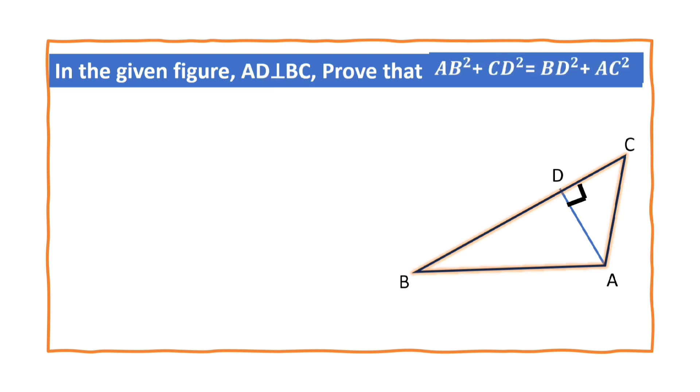We have to prove that AB² + CD². Where is AB? This is AB. Observe that this belongs to the right angle triangle. Which triangle? Right angle triangle ADB. I will highlight this one.